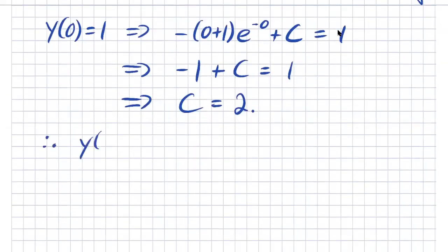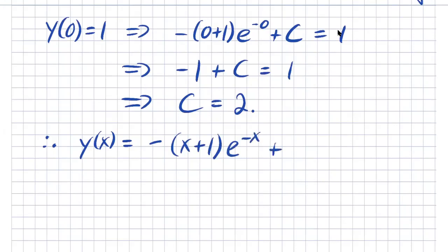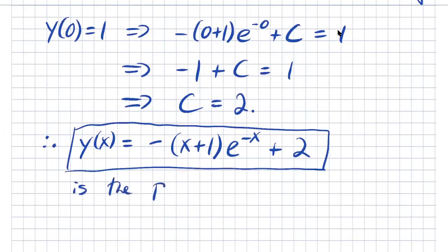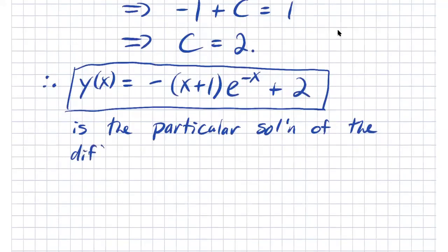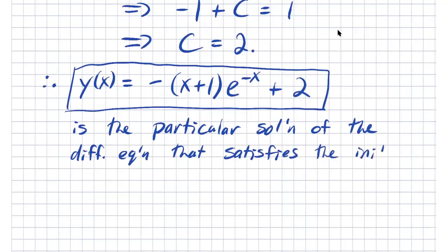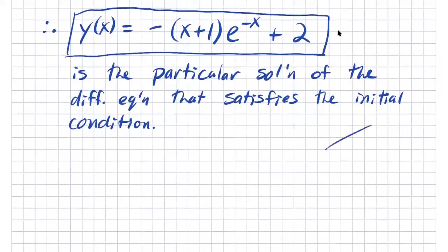Therefore, y of x equals negative (x plus 1) e to the negative x plus 2 is the particular solution of the differential equation that satisfies the initial condition y of 0 equals 1.